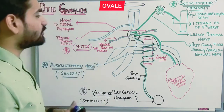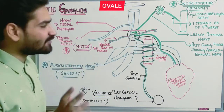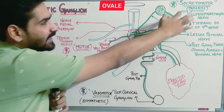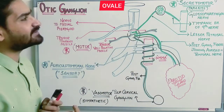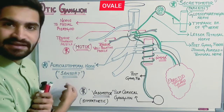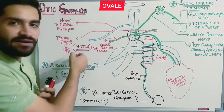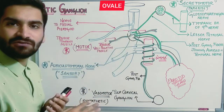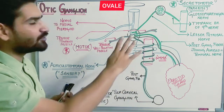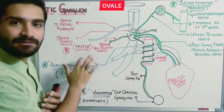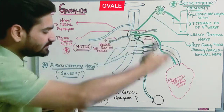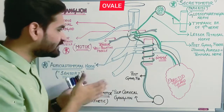There are four kinds of supply from the otic ganglion: first is secretomotor or parasympathetic supply; second is sympathetic or vasomotor supply; third is sensory supply; and fourth is motor supply. These are the four kinds of connections from the otic ganglion to the parotid gland. We are going to study all four.